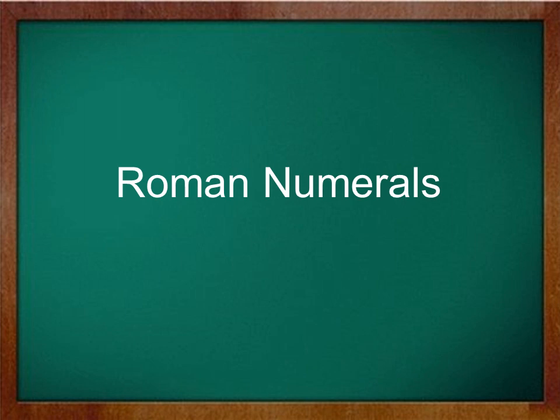Let's start with the basics. There are seven symbols in the Roman numeral system. Each symbol is represented by a letter of the English alphabet. You can write any number using a combination of these symbols. Let's take a look at these symbols.